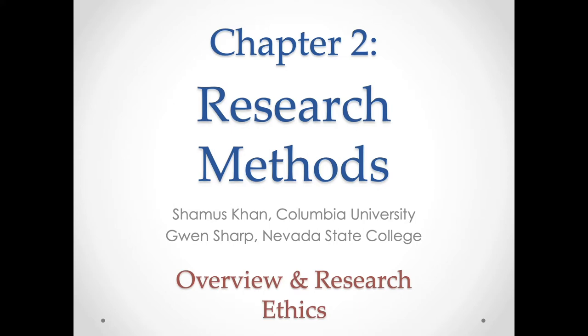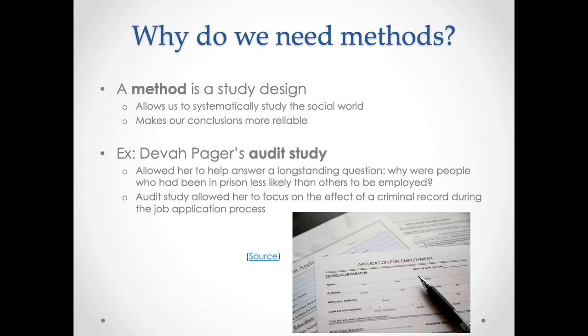The first question is why we need method at all and why method is an area of social science inquiry. Method isn't just something that we do — it's something that we study and debate. How it is that we can best know something is referred to as an epistemological question. 'Episteme' is the root of that word, which means knowledge.